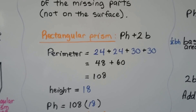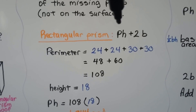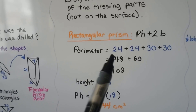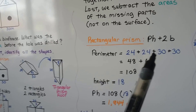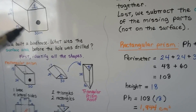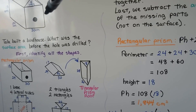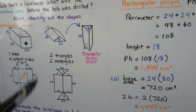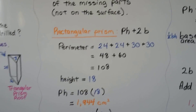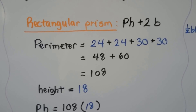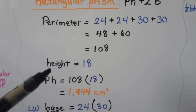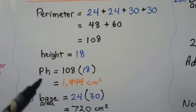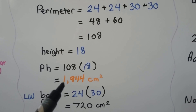For the rectangular prism, we're going to use pH plus 2B — that's perimeter times height plus 2 times the base. The perimeter is 24 plus 24 plus 30 plus 30, because if one side is 24 the opposite is 24, and if one side is 30 the back is 30 as well. That gives us 48 plus 60, which equals 108. The height is 18, so perimeter times height gives us 1,944 centimeters squared.